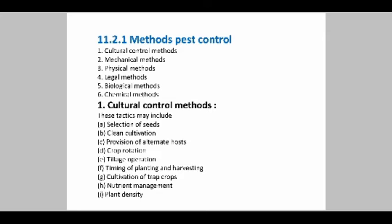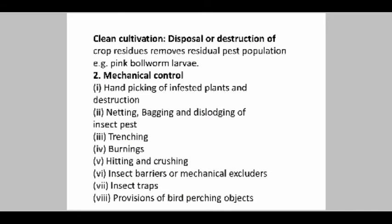The selection of seed cultivation is needful. When seed is damaged by insects or pests and is sown, it may cause poor germination or poor seedling health. So seed-resistant crop varieties are used for crop production. Regarding clean cultivation, the disposal or destruction of crop residue removes the residual pest population from previous crops. In that, pink bollworm larvae are destroyed.